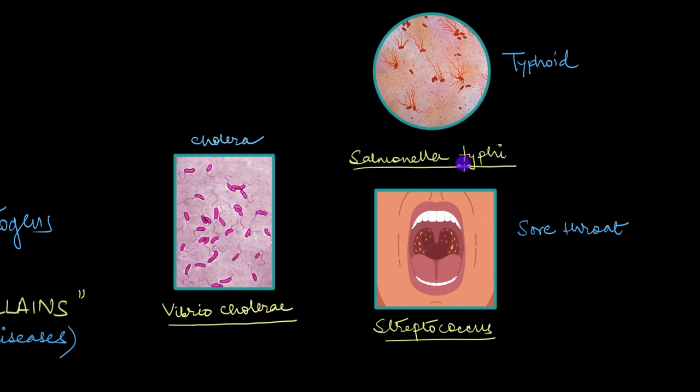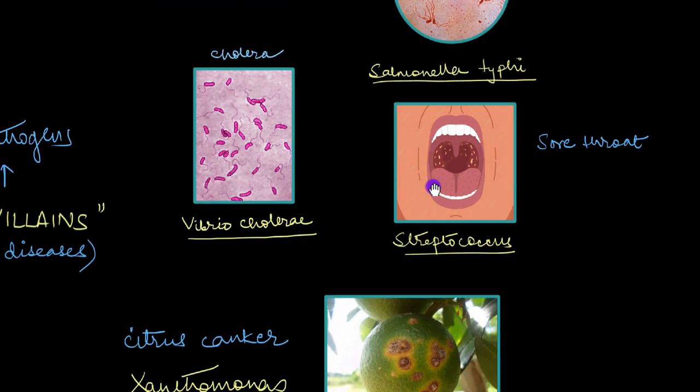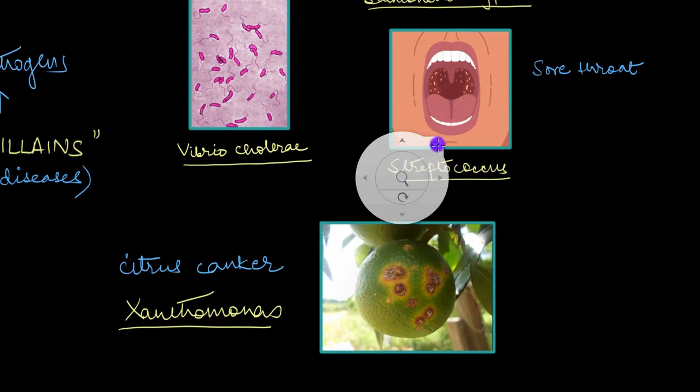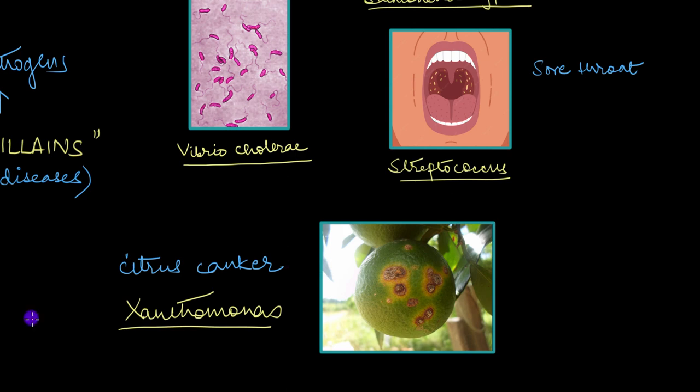Now, there are many bacterial diseases seen in animals. But what about plants? A very common bacterial disease that is seen in plants is the citrus canker disease. Have you ever seen a lemon with spots like this? So this is an actual disease which is the citrus canker disease and it is caused by a bacterium called Xanthomonas. Now, there are many bacterial diseases seen in plants as well. And this is just a tiny example of that.